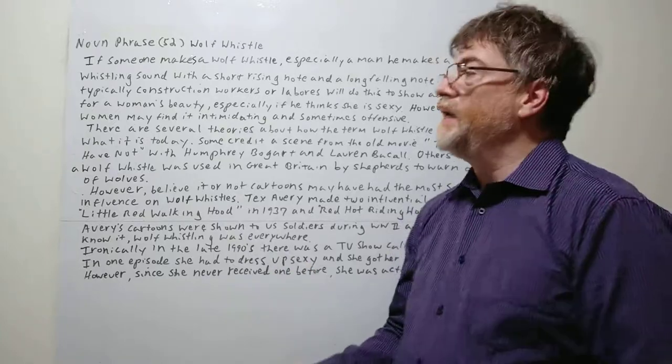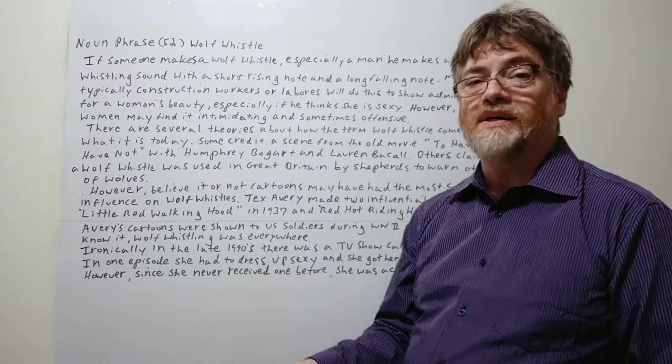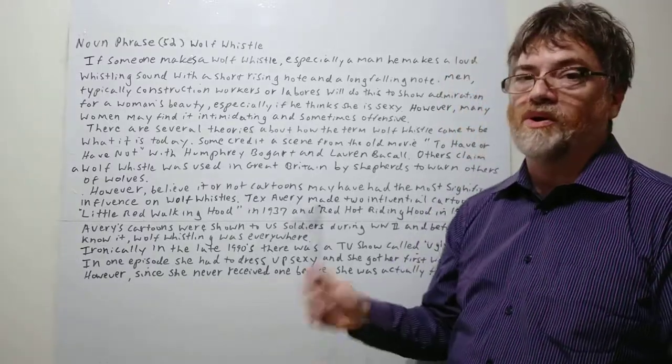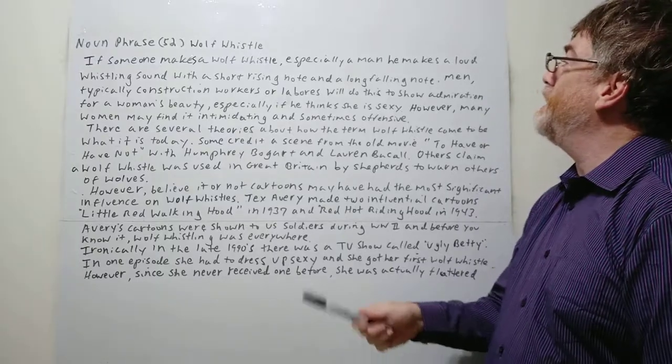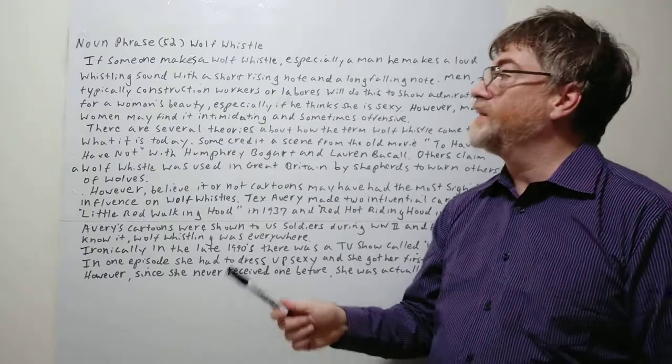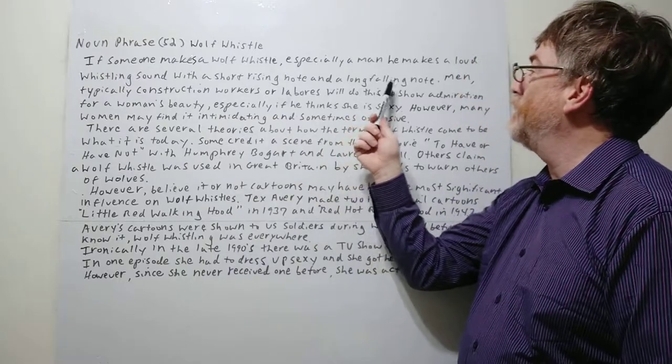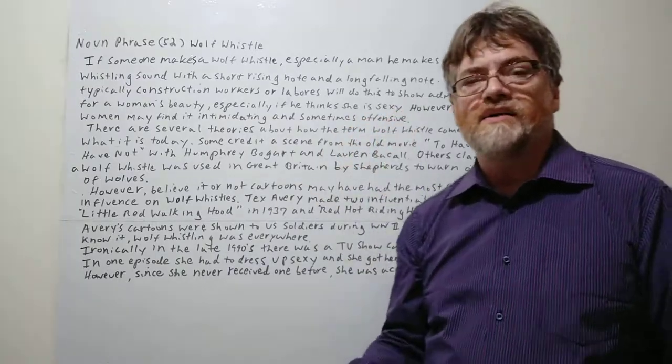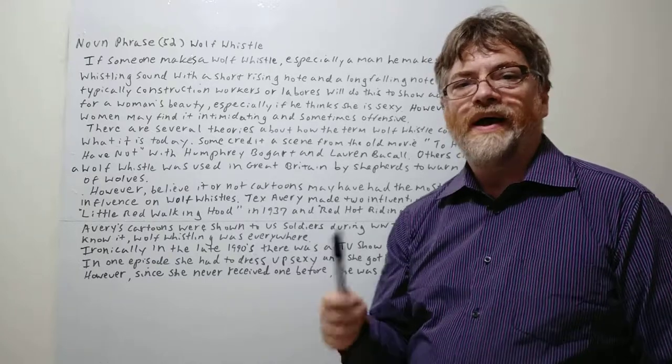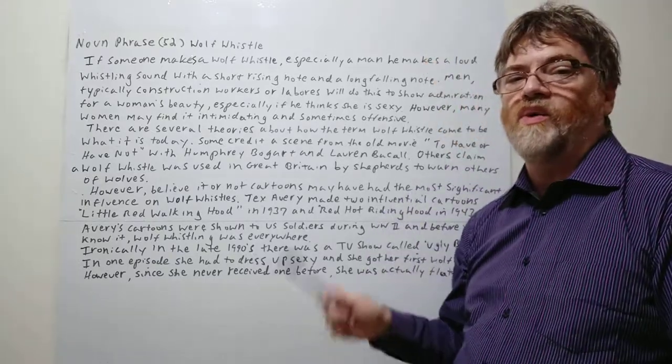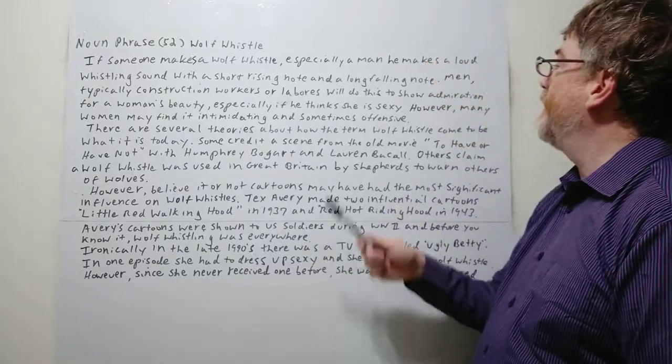Let's take a look at the note. If someone makes a wolf whistle, especially a man—it's almost always a man—he makes a loud whistling sound with a high rising note and a low falling note. It kind of sounds probably something like [whistles]. That would be your typical sort of wolf whistle.